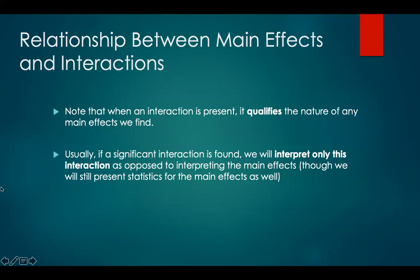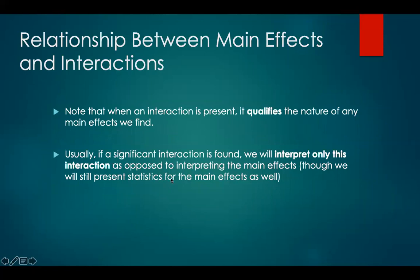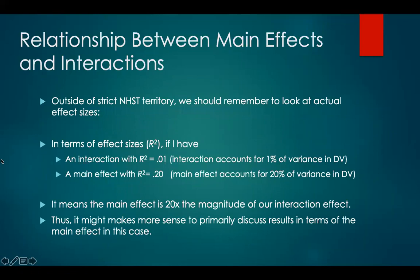One important thing to note is that when an interaction is present, it qualifies the nature of any main effects we find. Usually, if a significant interaction is found, we interpret only the interaction rather than the main effects, though we often still present statistics for the main effects as well. Outside of strict null hypothesis significance testing, we should look at actual effect sizes. For example, if an interaction has an R-squared of 0.01, it accounts for 1% of the variance in the DV. If a main effect in the same study has an R-squared of 0.2, it accounts for 20% of the variance — 20 times the magnitude of the interaction — so it might make more sense to primarily discuss results in terms of the main effect.